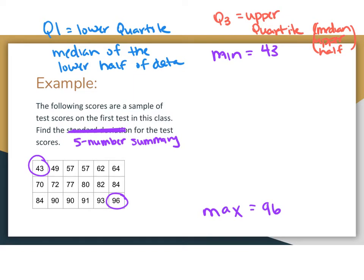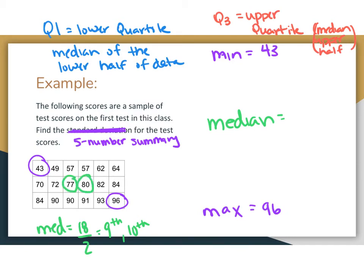The first step is to find the actual median of this data set. There are 18 values here, which means it's an even data set. To find the median, we do 18 divided by 2 and get 9. With an even number, we take the 9th and 10th observations. The 9th observation and the 10th observation are 77 and 80, so the median is 77 plus 80 divided by 2, which gives us a median of 78.5.